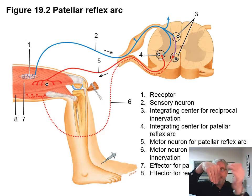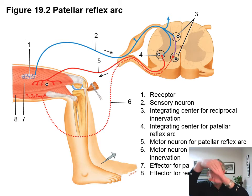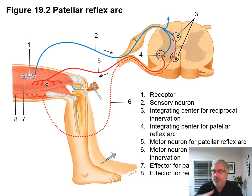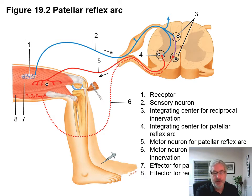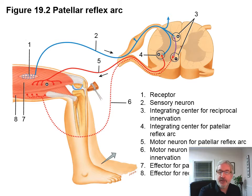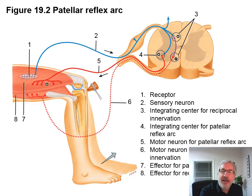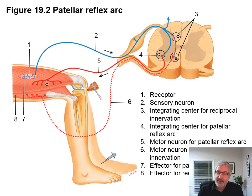Those two things have to happen together. If you have your leg bent and hit the patellar tendon with a hammer, the leg kicks out because the quadriceps muscles contracted. At the same time, the hamstring muscles had to relax to allow that movement — otherwise you'd tear the hamstrings. Your muscles have to work in concert with each other, so there are two innervations that happen. This is a monosynaptic reflex arc, but there's also a polysynaptic portion, and other portions that go up to the brain to say, 'Somebody hit me with a hammer — what do you want me to do?'